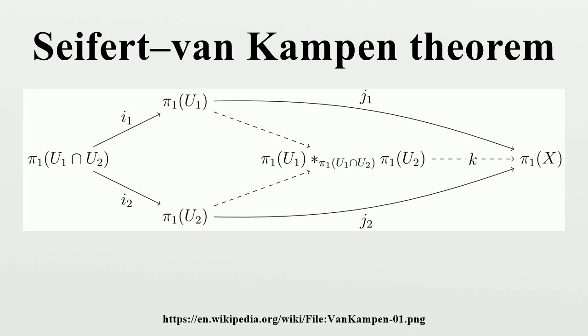In particular, if X is a contractible space and A consists of two distinct points of X, then the fundamental groupoid is easily seen to be isomorphic to the groupoid I, often written with two vertices and exactly one morphism between any two vertices.